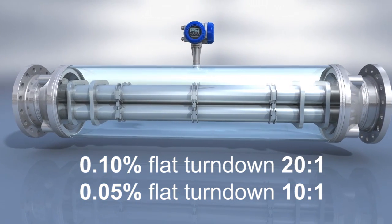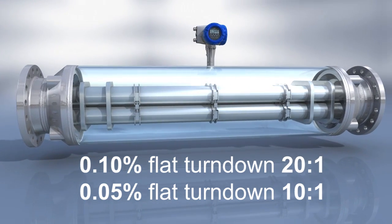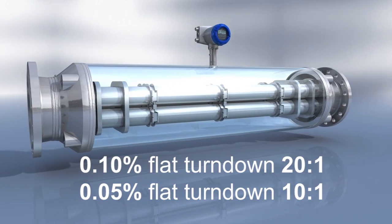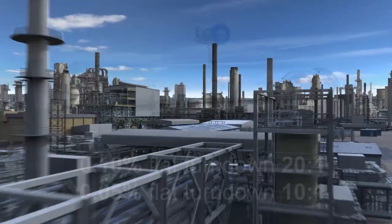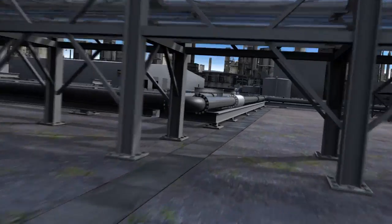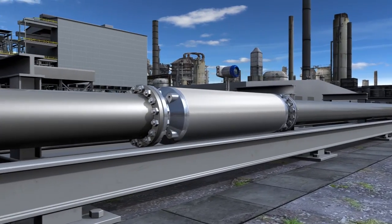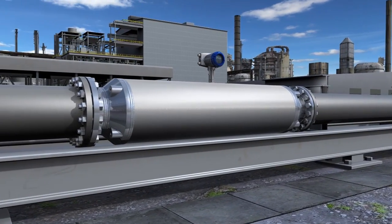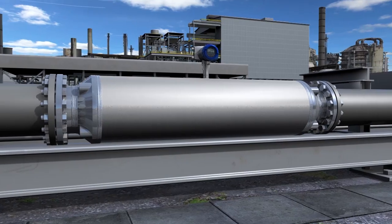Accuracy is 0.1% with a turndown of 20 to 1, and an optional 0.05% flat accuracy with a turndown of 10 to 1. The OptiMass 2400 S400 is the meter for fiscal pipeline transfer, leak detection, ship loading, bunkering, and allocation metering in the oil and gas market.